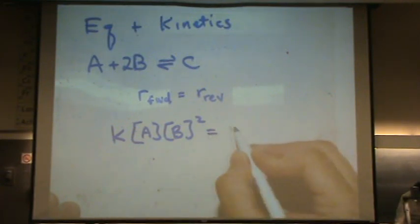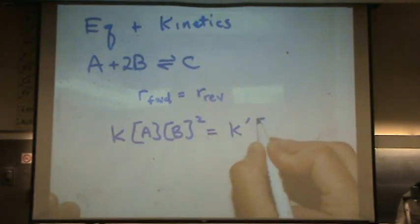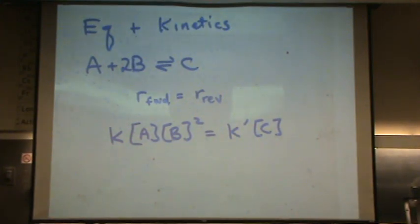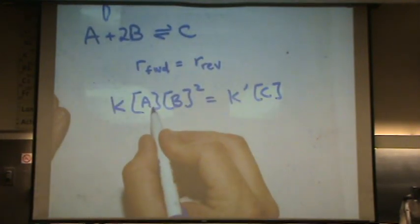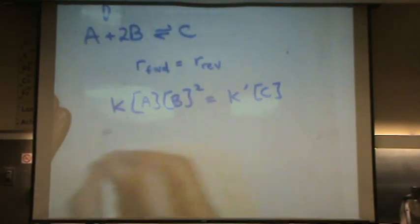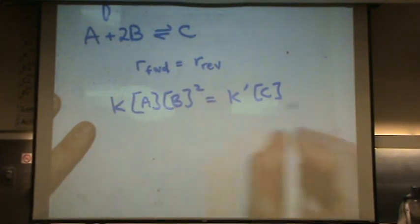That equals K prime for the reverse reaction times its concentration. I'm going to rearrange this a little bit: bring K prime to the left and A and B to the right.